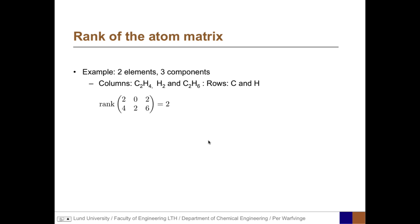Let's look at the rank of the atom matrix for a system with two elements and three components: C2H4, H2, and C2H6, where the rows represent C and H. The first column is 2 and 4 for C2H4; the second column is 0 and 2 because H2 contains no carbon but two hydrogen atoms; and the third column is 2 and 6 for C2H6. The rank of this matrix is 2, which means we have two independent elements and can form two independent element mass balances.